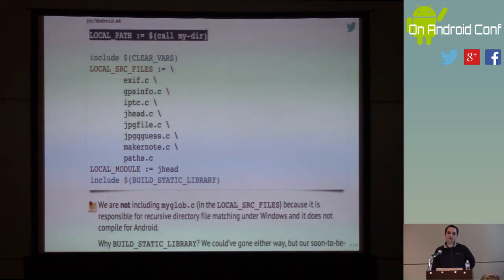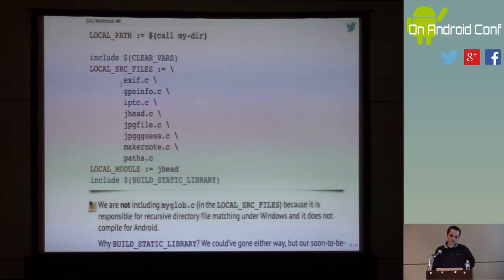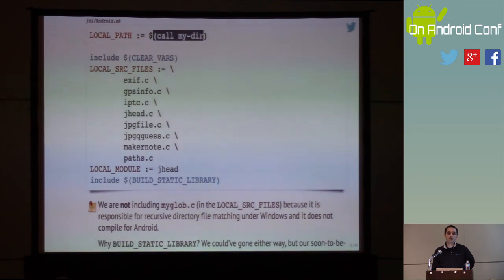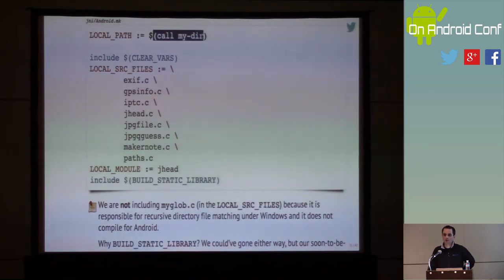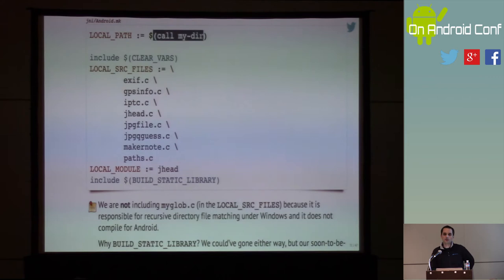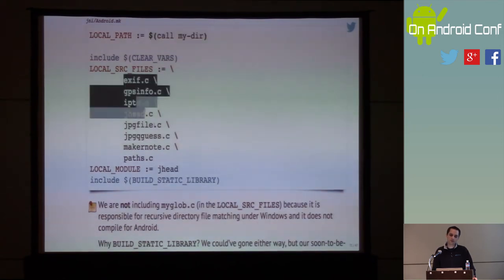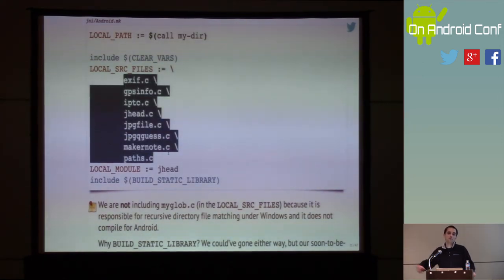LOCAL_PATH is a setting specifying that all files are relative to whatever this evaluates to — the current directory where the makefile itself is located. It's just a GNU make macro that gives you back the current directory of the makefile, and these files are just relative to that. You can have subdirectories if you want to organize things differently.